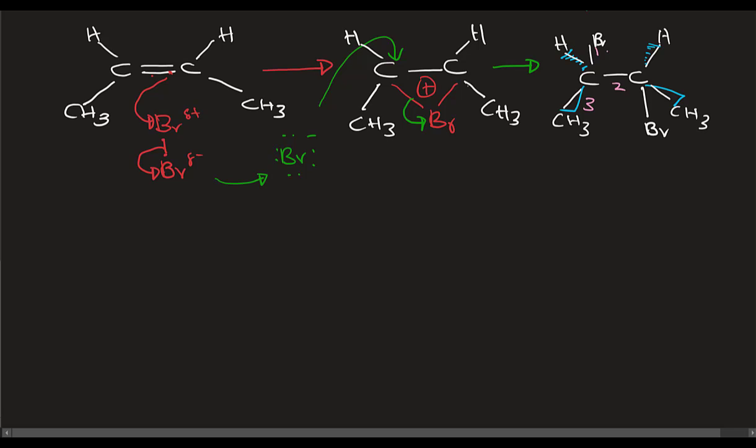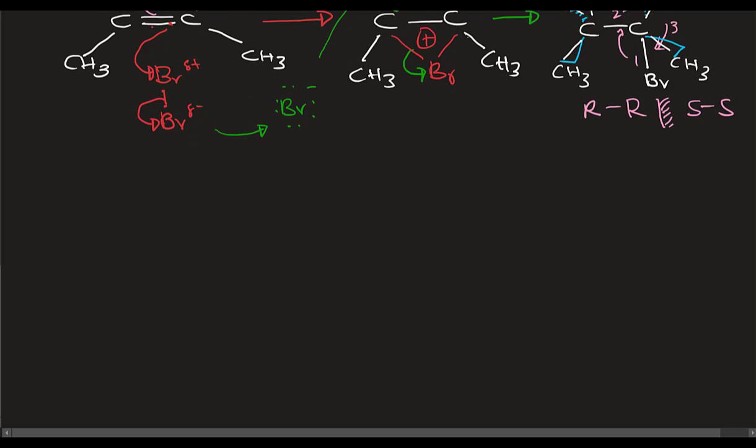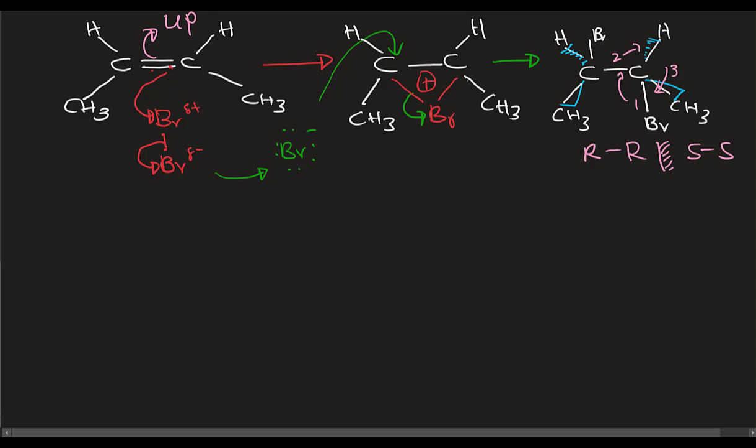If you see the bromine, it is carbon-bromine on carbon 2 and carbon 3. This is the case where the bromine configuration gives us SS configuration. This is the case.